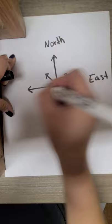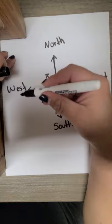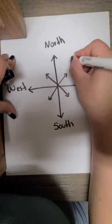An easy way to remember this: never eats soggy worms, or soggy waffles. And between north and east we're going to write northeast.